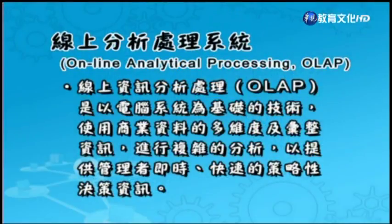接下来我们来看一下OLAP，线上分析处理系统。OLAP是以电脑系统为基础的技术，使用商业资料的多维度及汇整资讯进行复杂的分析，以提供管理者即时快速的策略性决策资讯。OLAP的特性包含：主要目的在汇整及分析组织内外资讯，以提供管理者即时的策略决策资讯参考；需要大量的组织内外部历史资料来做趋势分析；因为资料格式以及内容已经事先定义及计算完成，所以使用者在做资讯查询的时候速度非常快；还需要对多维度资料进行复杂的分析。典型的OLAP多维度分析处理包含几种方式：上转（Roll-up）、下拉（Drill-down）、切片与切钉（Slice and Dice）以及旋转（Pivot）。